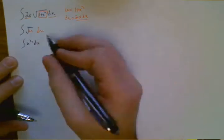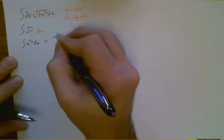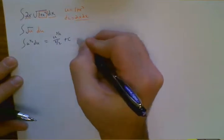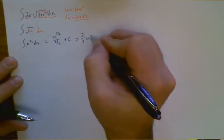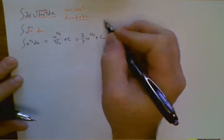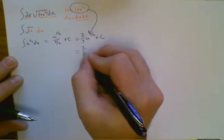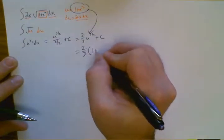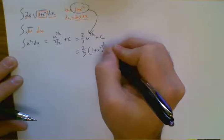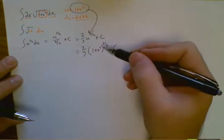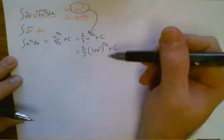Okay. This is really just u to the 1 half du. That's a reverse power rule. So this is going to be u to the 3 halves over 3 halves plus c. Clean that up. That's 2 thirds u to the 3 halves plus c. But u is 1 plus x squared. So just bring that right back in. So I have 2 thirds 1 plus x squared to the 3 halves plus c. If you go ahead and take a derivative of this, you'll get right back to here. That's how you know you did it right.